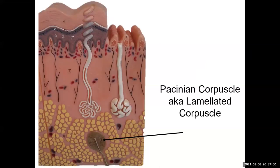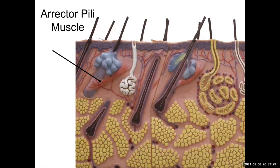Another type of sensory receptor is the Pacinian corpuscle, also known as the lamellated corpuscle. It looks like an onion with layers — like an ogre, it has layers. It's located deeper, so it senses deeper pressure or vibration. The erector pili is the only muscle in the skin — a smooth muscle — and it gives you goosebumps by contracting and pulling the hair. The structure surrounding the hair is the hair follicle, and the erector pili muscle attaches to the hair follicle.